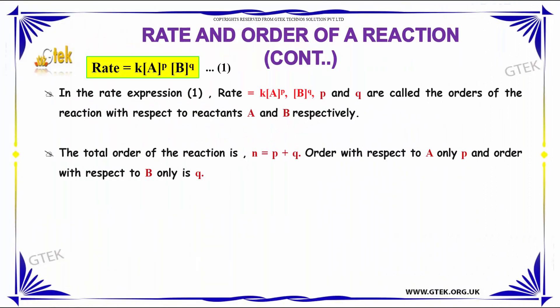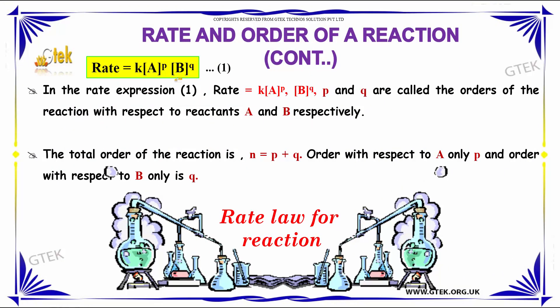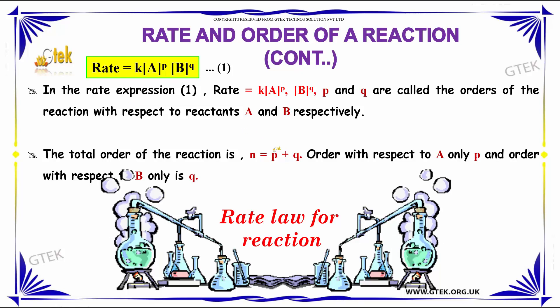Rate equal to k into A power p into B power q. So, here these values p and q are called the order of the reaction with respect to the reactants A and B respectively.